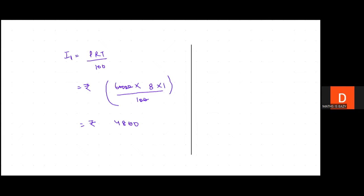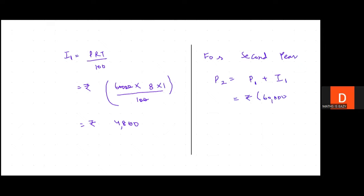For the second year, the new principal P2 = P1 + Interest of first year = Rs. 60,000 + Rs. 4,800 = Rs. 64,800. This is the principal for the second year. Time is again 1 year.